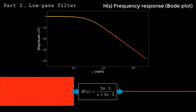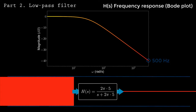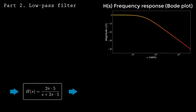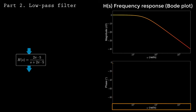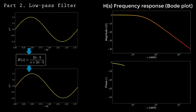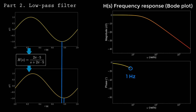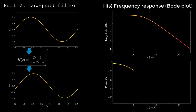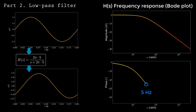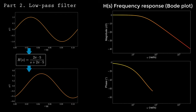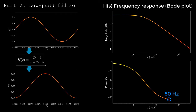At 500 Hz, the Bode plot magnitude is minus 40 dB, so only 1% of the signal remains. The second half of the Bode plot shows the phase as a function of frequency, which is useful for demonstrating how much delay is caused by the filter. At 1 Hz, there is very little delay. At 5 Hz, the phase is minus 45 degrees, implying the output will be delayed by one eighth of 0.2 seconds, or about 25 milliseconds. At higher frequencies, the phase delay increases up to about 90 degrees.